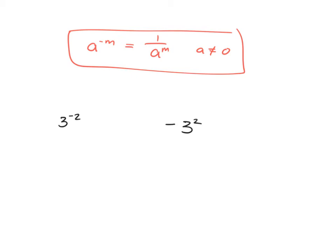It's very important to notice that there's a big difference between whether you've got the negative in the exponent or the negative dealing with the number. The negative in the exponent simply tells you that you're dealing with 1 over. So 3 to the negative 2 means you've got 1 over 3 squared, which is 1 over 9. That's very different to negative 3 squared, where the negative just means the number is negative, giving you negative 9.